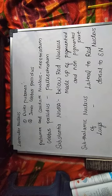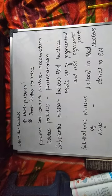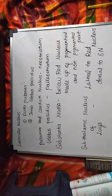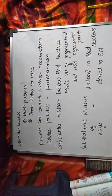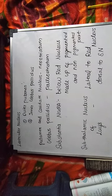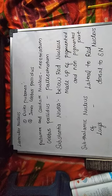So the outer part is called Putamen and the inner part is called Globus Pallidus. Putamen and Caudate Nucleus together we call Neostriatum. Globus Pallidus we call Paleostriatum. So the External Medullary Lamina divides the Lenticular Nucleus into outer Putamen and inner Globus Pallidus. Putamen is known as Neostriatum whereas Globus Pallidus is known as Paleostriatum.